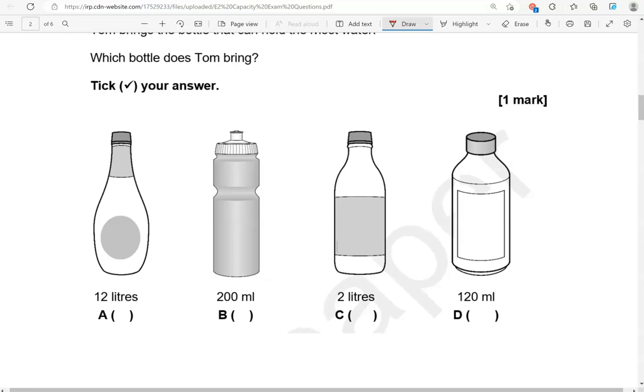Milliliters are much smaller than liters. So, 12 liters, that's the greatest of these. That bottle, that holds 12 liters, that holds the most. Because 200 milliliters, that is much smaller than 1 liter. Then we have 2 liters, which again is much smaller than 12 liters. And we have 120 milliliters, which is much smaller than 12 liters again.